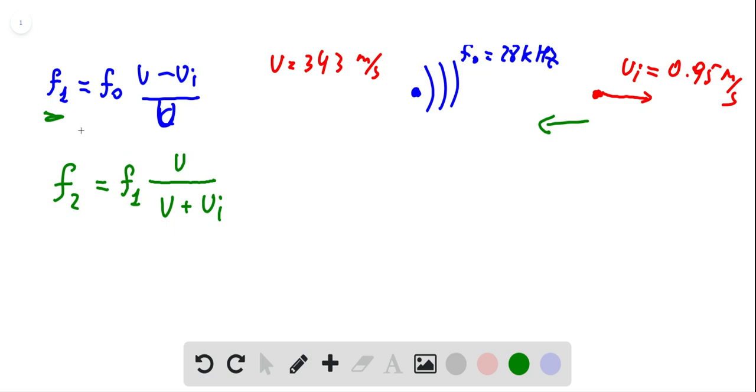And if we plug this here we get that the frequency of the reflected sound wave is V / (V + Vi). And now we need to find out the beat difference, beat frequency which is F naught minus F2, which is F naught * 2Vi / (V + Vi).